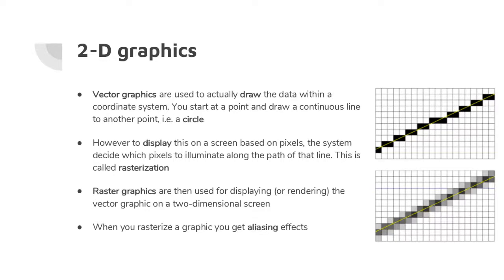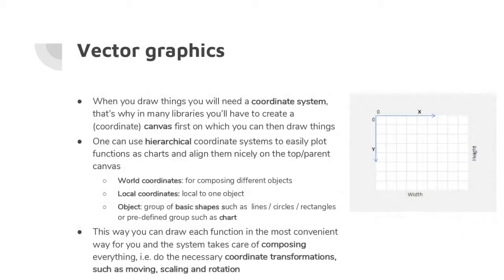In raster graphics, you store the graphic directly as pixels — a two-dimensional matrix with a value for each pixel for the three color channels. When you rasterize a vector graphic, you get an aliasing effect — the line looks staircase-like. The anti-aliased version looks much crisper. If you zoom out, the aliasing is less obvious, but anti-aliasing makes the result much more clean.